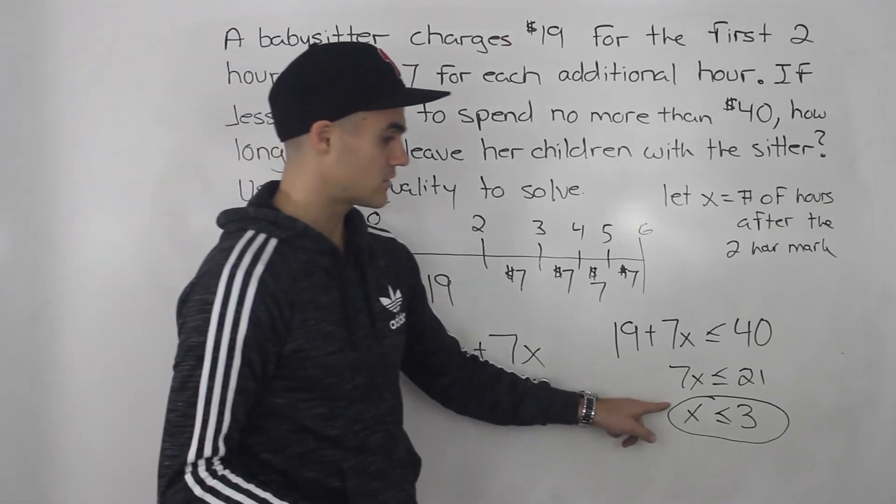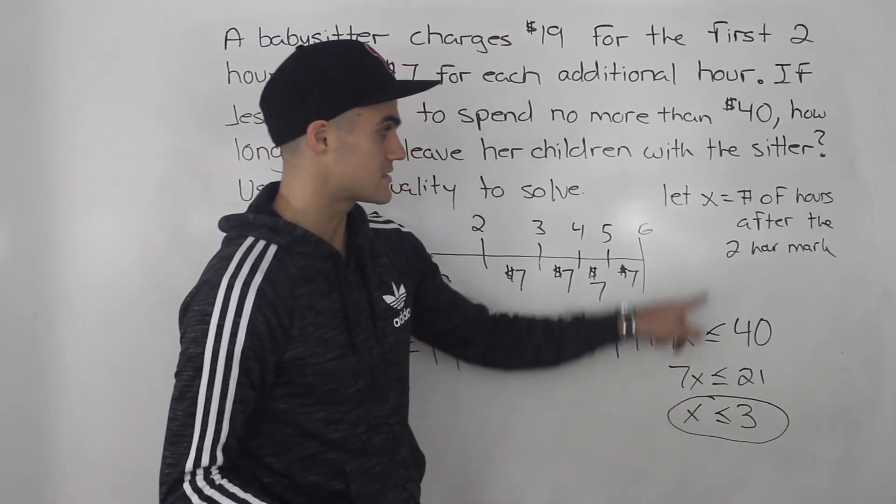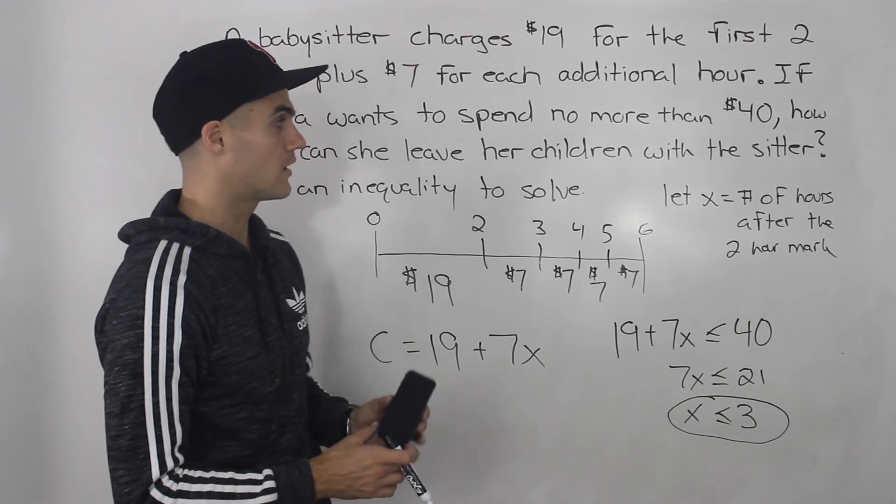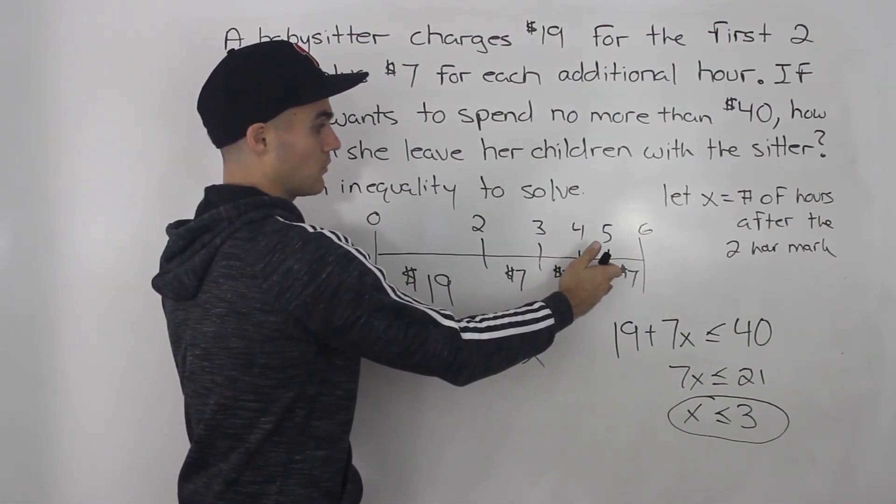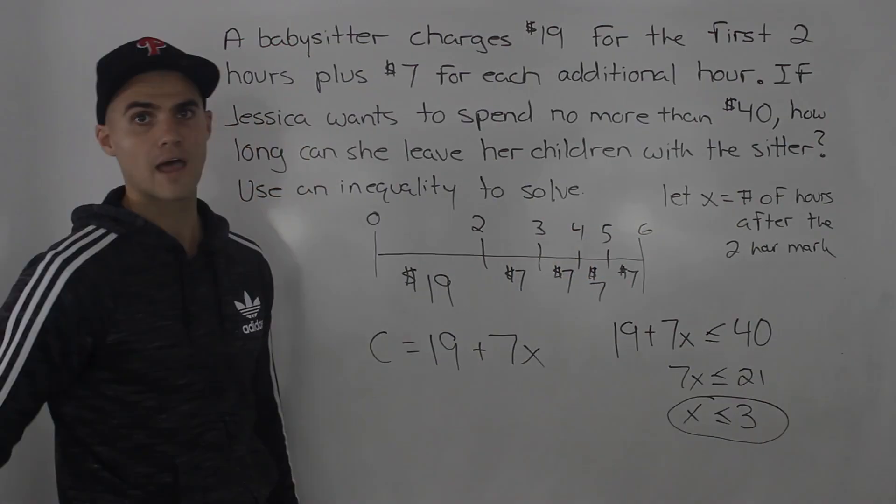So X is less than or equal to three, where X is the number of hours after the two hour mark. Or if you want to talk about it in total, she has to leave her child with the babysitter for five hours or less.